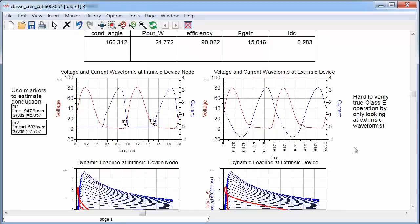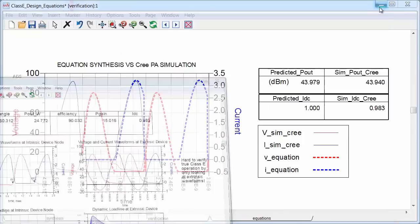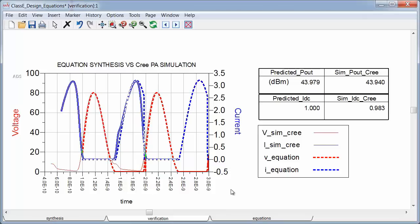And similar to my previous example, the initial results were excellent. So I got 90% efficiency with 15 dB of gain and 24.8 watts of output power at 1 gigahertz with a 28 volt supply. And here is the Cree PA simulation versus the initial waveform and power predictions from my class E synthesis tool. And the best part is it only took me about a half hour to get to this point, so that's a pretty good running start.